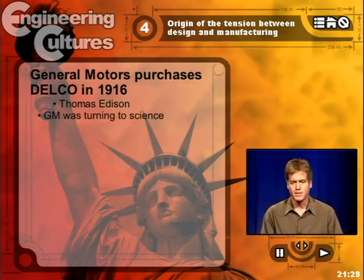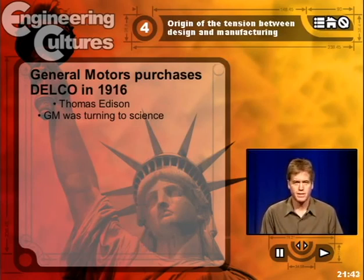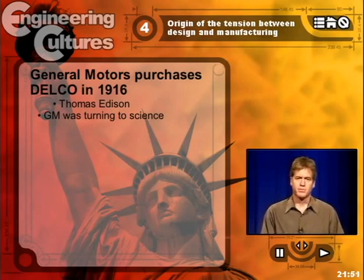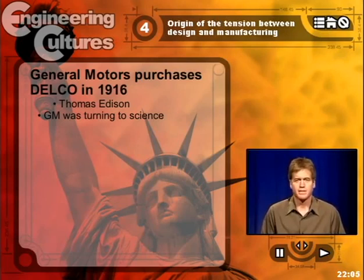GM, in formulating strategies to deal with Ford, decides to turn to science and purchases Delco, bringing it into the company. Where it's located is going to become important. In arriving at the company, Kettering wants to put into practice a new idea he'd been carrying for some time. He had read an article in 1915, and after a couple of years in the company, in 1919, he tries to put it into practice — the development of an air-cooled engine.